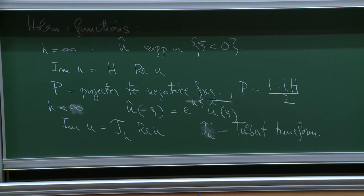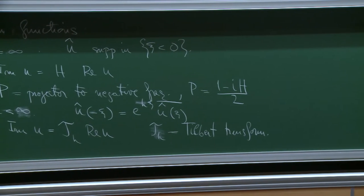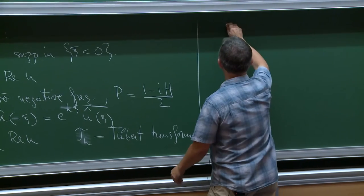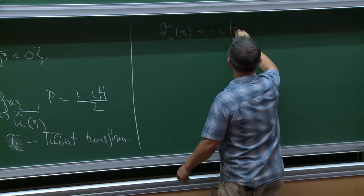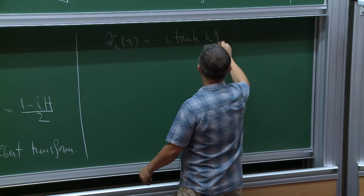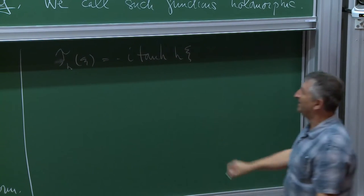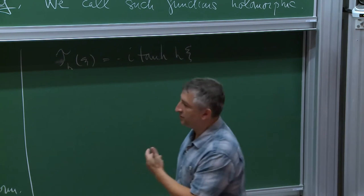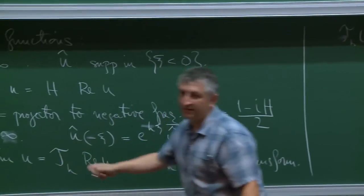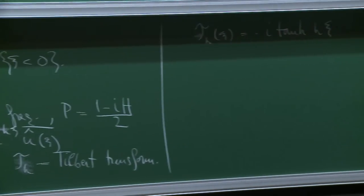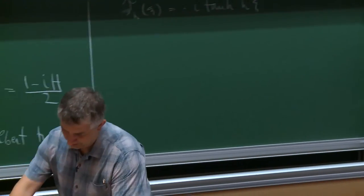The name 'Tilbert transform' was learned from collaborators — when I tried to look it up I could only find it in some software package, but it's a good name: Hilbert, Tilbert. There is a similar projector to the space of holomorphic functions in the finite depth case, with a formula involving one half of u plus one half times i times the inverse Tilbert transform acting on the real and imaginary parts of u.